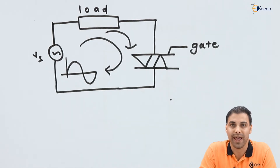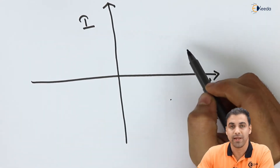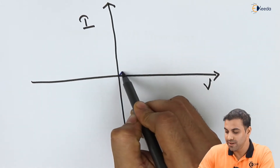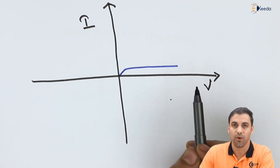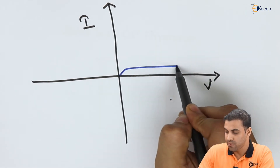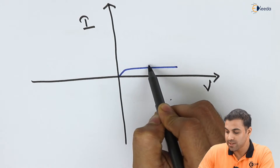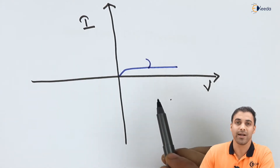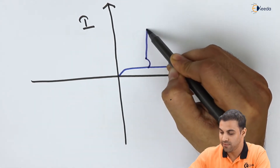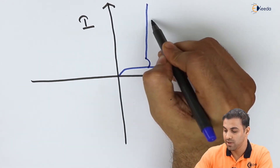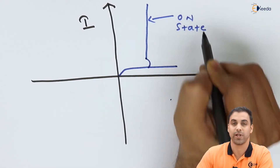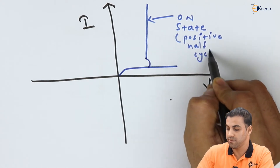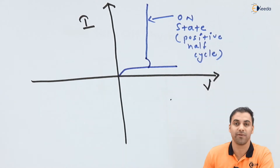For a better understanding, let's draw the VI characteristics of a TRIAC. Let the first quadrant be the forward biased condition and the third quadrant be the reverse biased condition. During the forward biased condition, initially there will be a small leakage current. Once a small triggering gate pulse is applied and the current reaches the latching current value, it then reaches the holding current value, and the current suddenly rises. This is called the ON state during the positive half cycle.